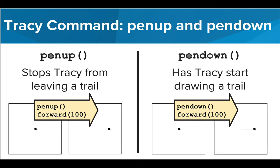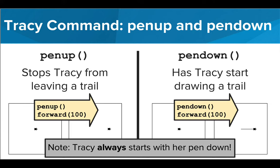We also have some commands to control the trail that Tracy leaves as she moves. If we call the pen up command before telling Tracy to move, she will not leave a trail behind her. If we then want her to start leaving a trail after we've used the pen up command, we can use pen down to have her start drawing a trail. An important thing to note is that Tracy's default is to draw a line when she moves, so you do not need to use the pen down command when you first move her if you want her to leave a trail.